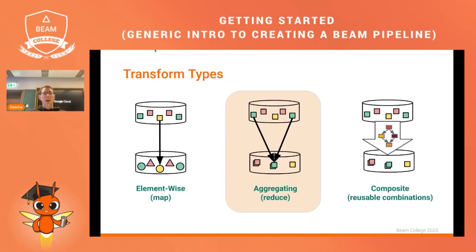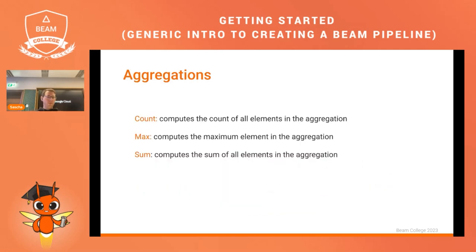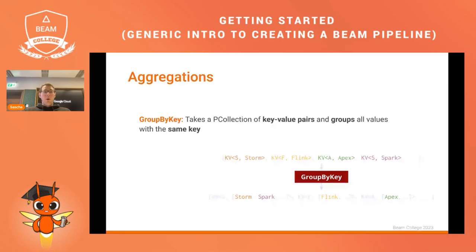The next transform type is aggregation transforms, which are a type of PTransform that combines multiple elements in a PCollection into a single value. For example, you can count the number of elements in a dataset or calculate a mean, median, or other statistical measure.